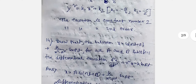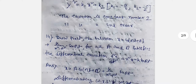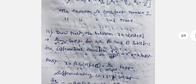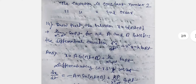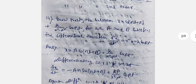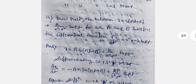Next question: Show that the solution x = a cos(nt) + b + k/(n² - p²) · sin(bt), for all A and B, satisfies the differential equation d²x/dt² + n²x = k sin(bt).